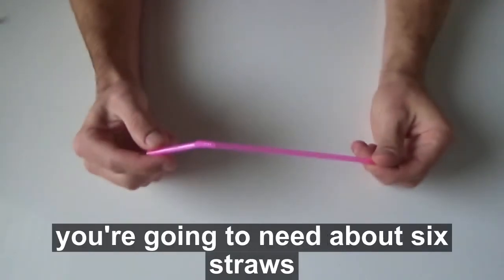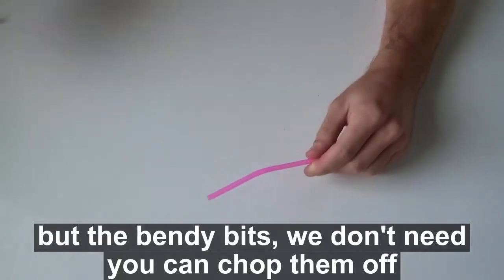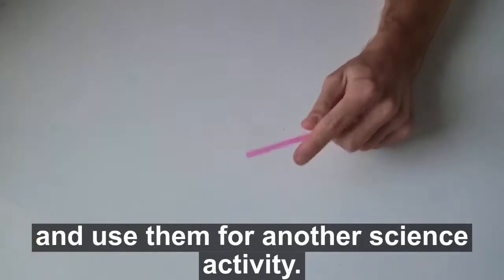To make your cube-shaped bubble wand, you're going to need about six straws, or the bendy bits we don't need. You can chop them off and use them for another science activity.